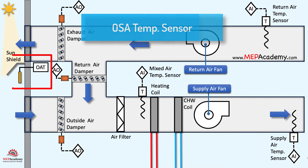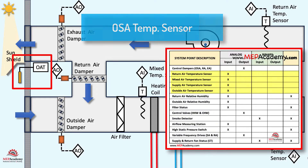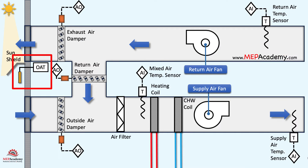The outside air temperature sensor is crucial for the control of economizer systems and air handlers. Economizers utilize outdoor air for cooling when the outdoor conditions are favorable. The sensor helps determine whether the outdoor air is suitable for free cooling, allowing the system to reduce reliance on mechanical cooling and improve energy efficiency.